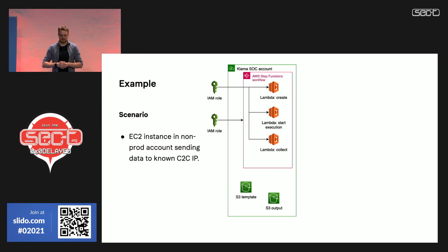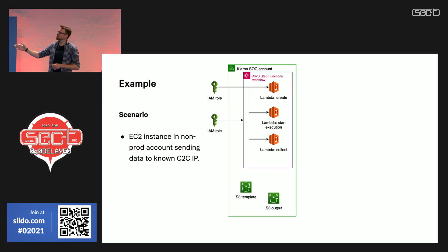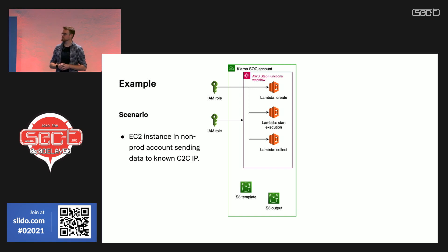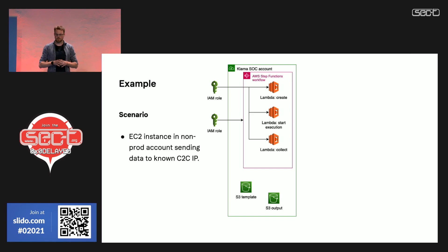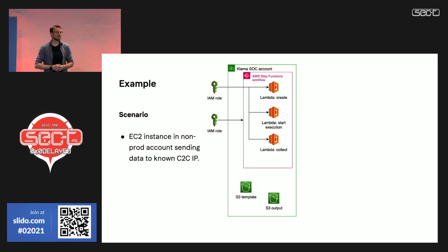Let's take an example. We have an EC2 instance in a non-prod account sending data to a known C2C IP address — let's assume this is bad. What you can see in the picture here is our own Klarna SOC account, in which we have a few different IAM roles that allow us to do certain types of tasks. We have baked together what we want to achieve in a Step Function in which there are several different Lambdas, each with their own mission. The first Lambda spins up the resources we need in the target account. The second Lambda monitors and starts the execution of those resources and tracks what's happening. Lastly, we collect all artifacts from the target account and ship them back to our SOC account's S3 output bucket. The templates for what we want to create are also stored in a bucket in our own account.